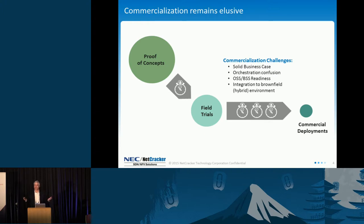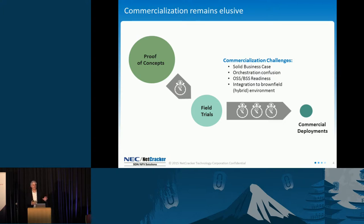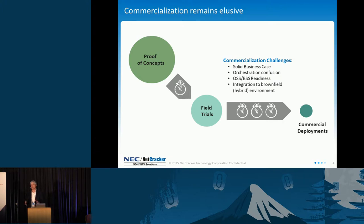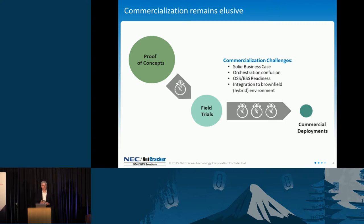So if there's so much interest and so much promise, why is commercialization held up? If you look at where the trials have been and where the deployments have been, there's a big gap. There have been a tremendous number of POCs, but not a large number of real commercial deployments. And those commercial deployments that have happened have been subscale — in particular domains or particular areas of the network. So why is that? There are a few different reasons. First of all, the overall business case has not really been proven.